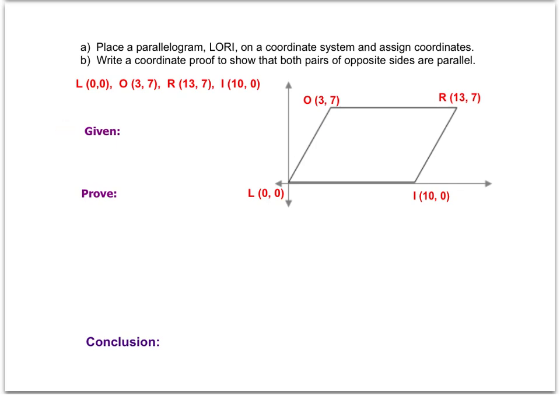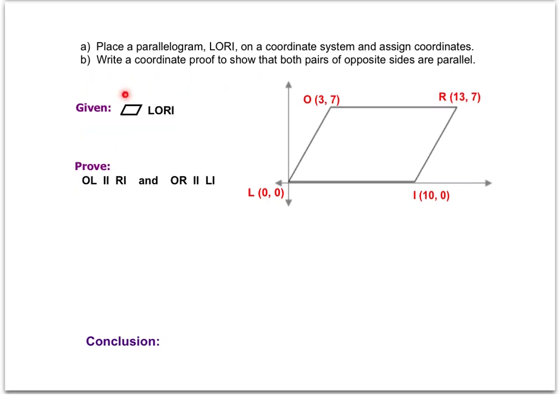Then we'll talk about what they're asking us for the given and the prove statement. The given statement says: place parallelogram LORI on the coordinate system. So they're giving us the information that we have a parallelogram — specifically parallelogram LORI. And we're asked to prove that both pairs of opposite sides are parallel. So we can fill in our if-then statement: given parallelogram LORI, prove both pairs of opposite sides are parallel.